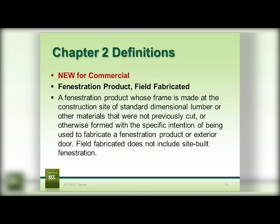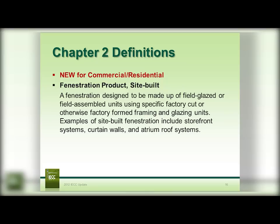There is a new definition in the commercial section for field fabricated fenestration product — something where the parts show up on site and tradespeople build it on site. This is different from the next definition, site-built fenestration, which was discussed in the 2009 codes but now has a formal definition. Site-built fenestration is a window or door product built using factory-cut, factory-fabricated parts that are assembled on site. Please remember the difference — it makes a large difference in how the code is interpreted and enforced.